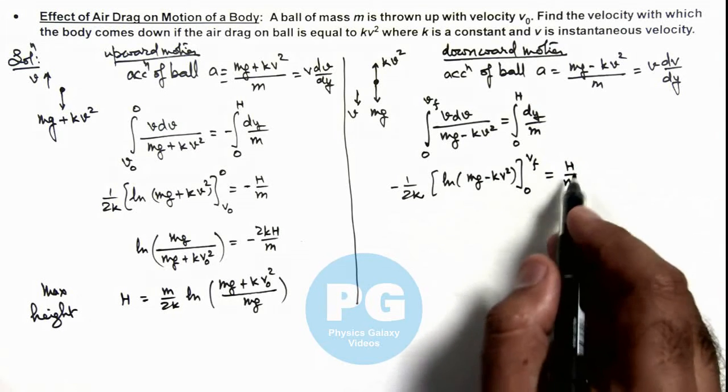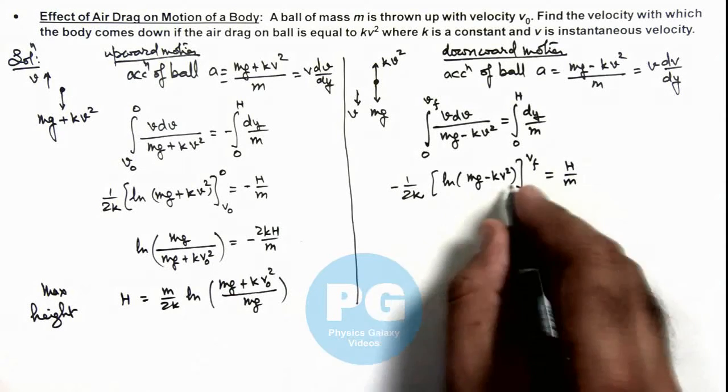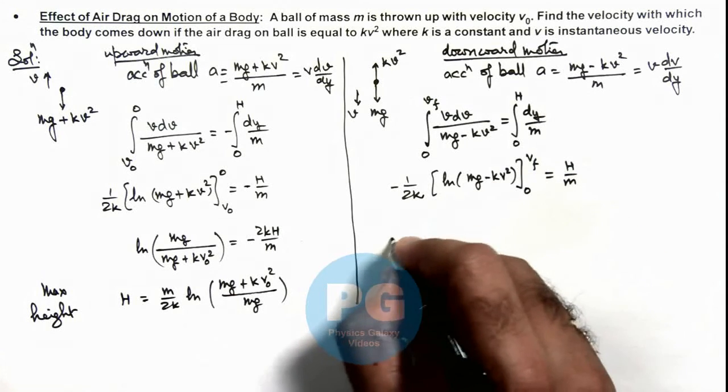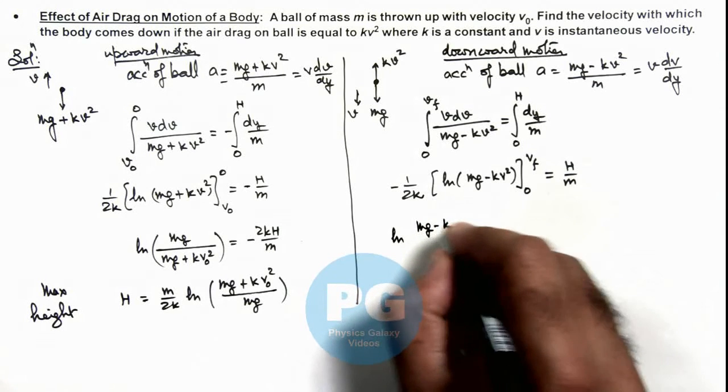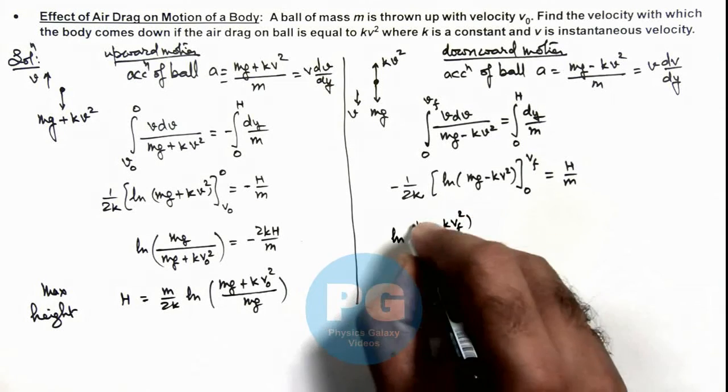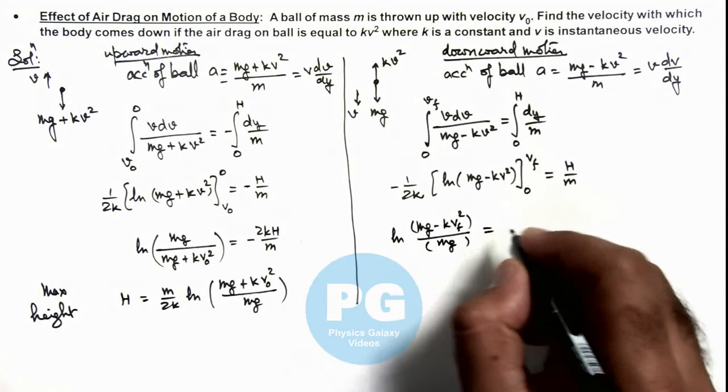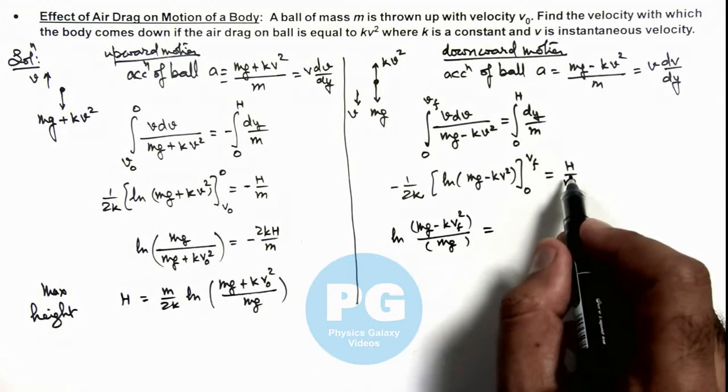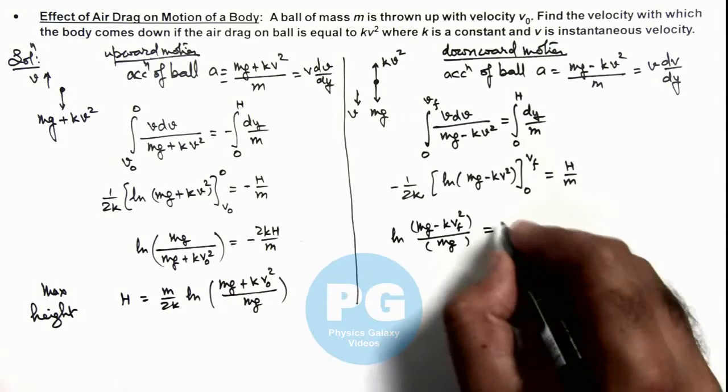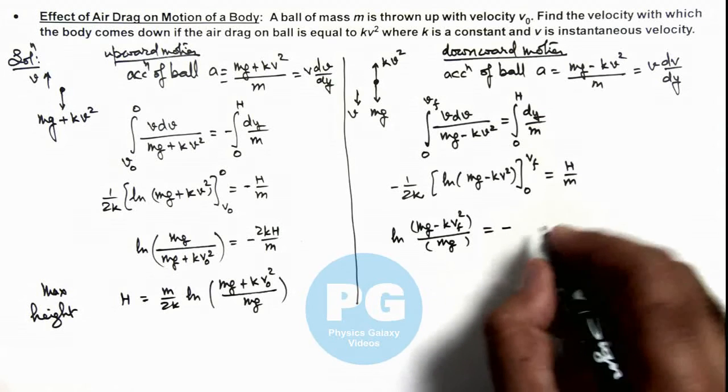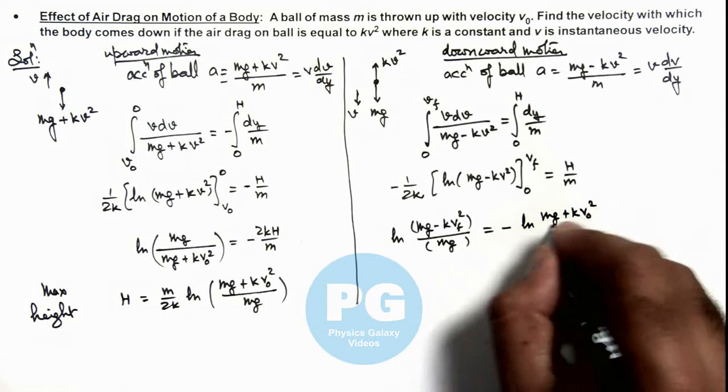Here if we substitute the value of 2kH by m from here, you can see the result we are getting on left hand side. After substituting the limits is ln of (mg minus kv_final²) divided by mg is equal to, on substituting the value of minus of 2kH by m, this will be minus of ln of (mg plus kv₀²) by mg.